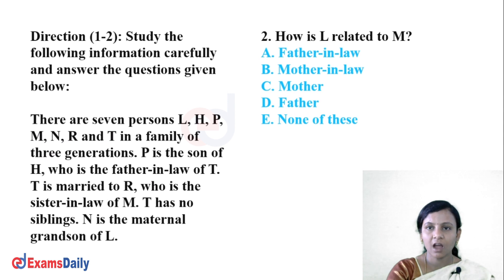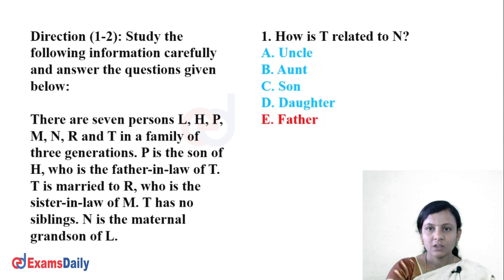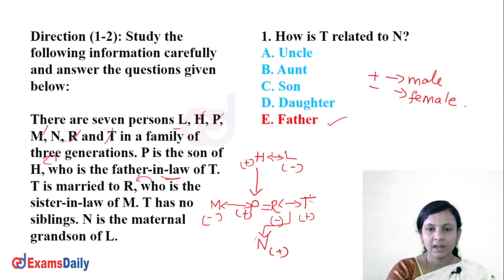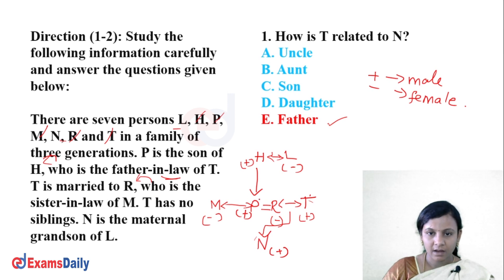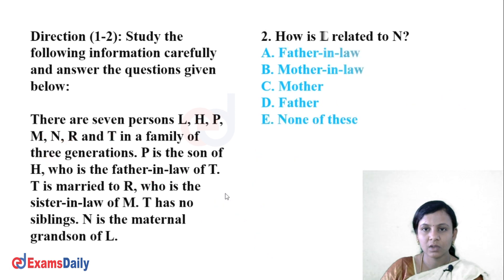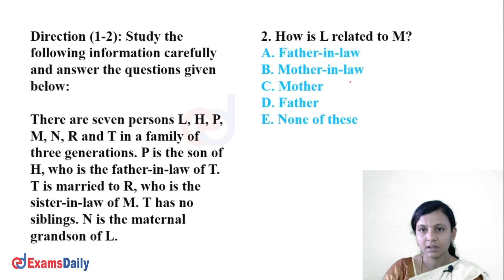The second question asks: how is L related to M? L is in the first generation, and M is P's wife. L has a son P, and P's wife is M. So the relationship between L and M is that of mother-in-law and daughter-in-law. Therefore, L is related to M as mother-in-law.